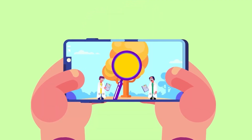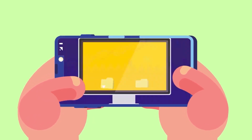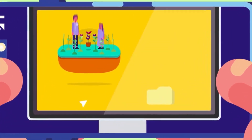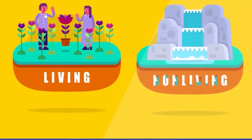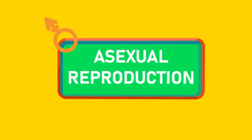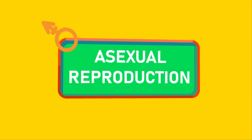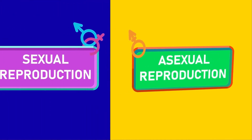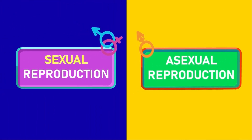As we learned in our very first video, 'What is Biology?', reproduction is a characteristic unique to living things. Non-living things obviously cannot reproduce. In today's video we will discuss what asexual reproduction is and what are some of its types. There are two major types of reproduction: sexual and asexual reproduction.